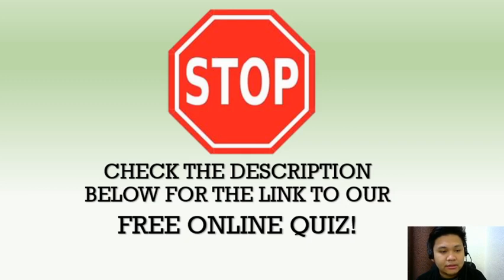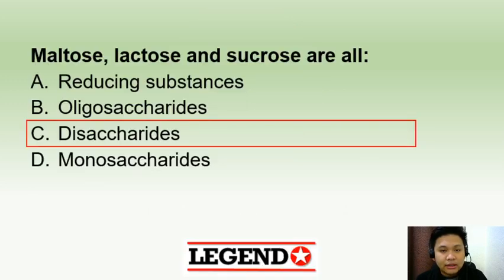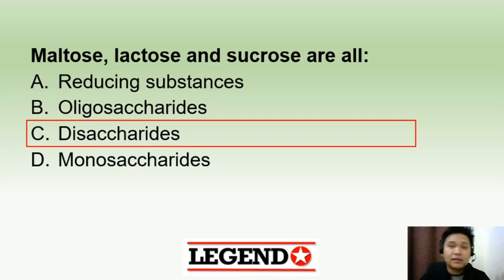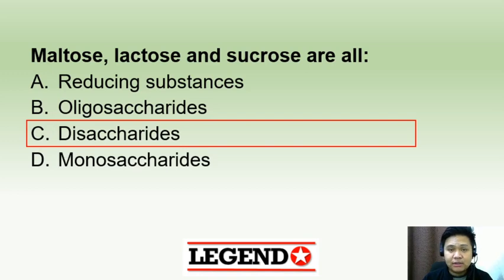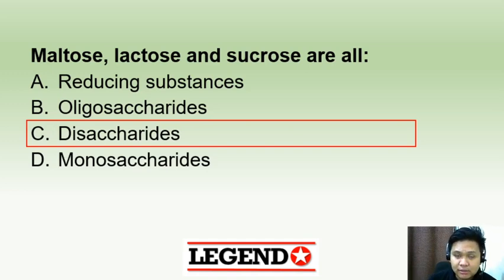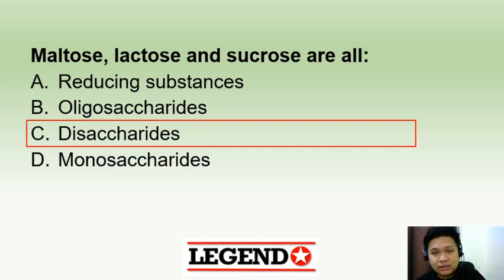This is the first question. Maltose, lactose, and sucrose are all disaccharides. Remember, your carbohydrates can be classified according to the number of units they have. Monosaccharides are the simplest, followed by disaccharides, which are comprised of two monosaccharides joined together by a glycosidic bond.